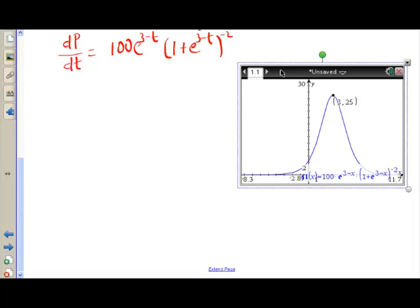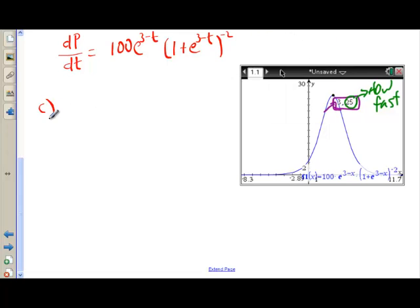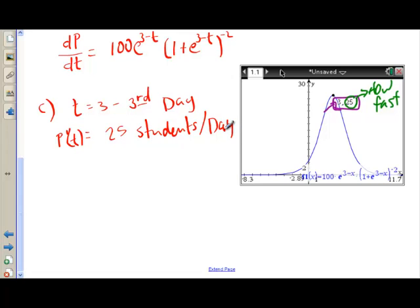So over here, we've got our picture. And so what we've learned then is that our flu bug is growing fastest at this point. Well, what does that mean? Well, the first coordinate is going to be the number of days that we're on, and the second coordinate is how fast. So to answer Part C, we would say that when t is equal to 3, which is the third day, then the number of students affected would be 25 students per day. So then that P(t) would be 25 students per day. And that's the fastest rate that it's growing. So a few steps, but not horrible. You can do it.